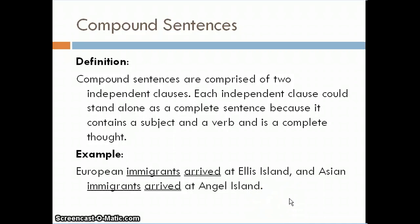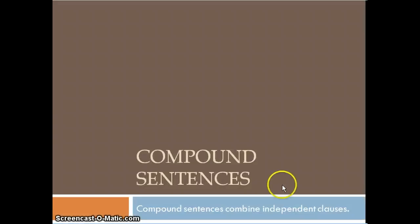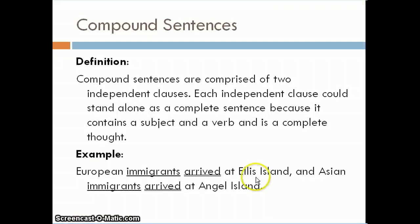Here is an example of a compound sentence: 'European immigrants arrived at Ellis Island and Asian immigrants arrived at Angel Island.' Each part is an independent clause and could be a sentence by itself. 'European immigrants arrived at Ellis Island' has a subject (immigrants), a verb (arrived), and is a complete thought. Similarly, 'Asian immigrants arrived at Angel Island' has a subject, a verb, and is a complete thought.